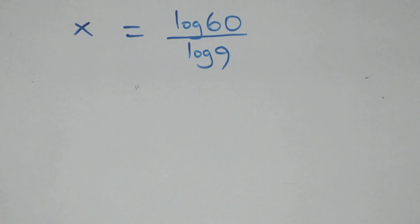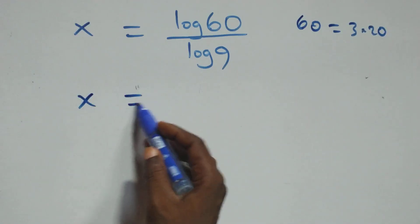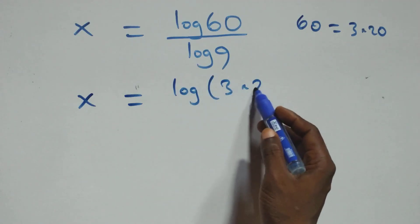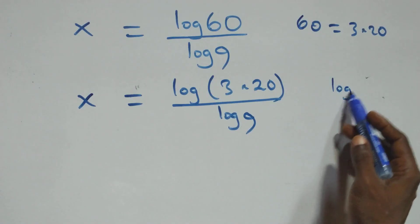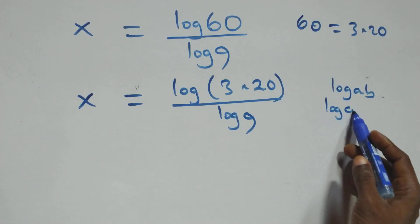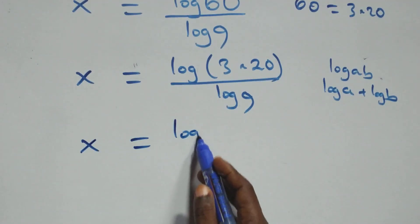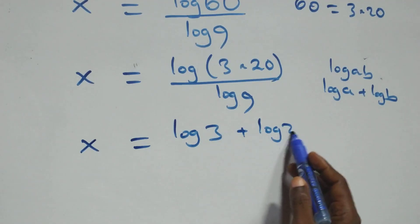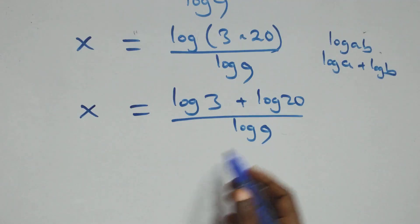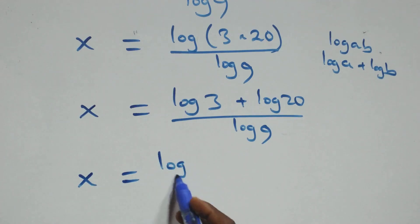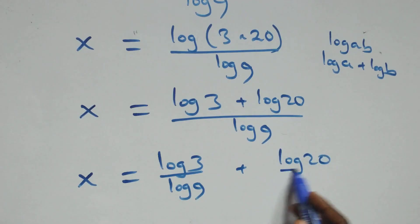The next step, we can express 60 as 3 times 20, so x equals log(3 times 20) over log 9. This follows the law of logarithms: log(a times b) can be written as log a plus log b. So we have x equals log 3 plus log 20, all over log 9. We then separate this into two fractions: x equals log 3 over log 9 plus log 20 over log 9.